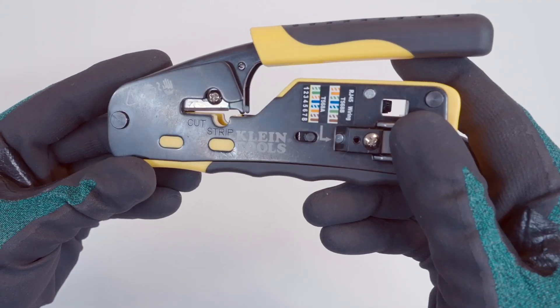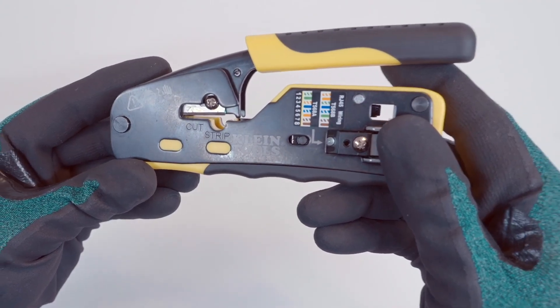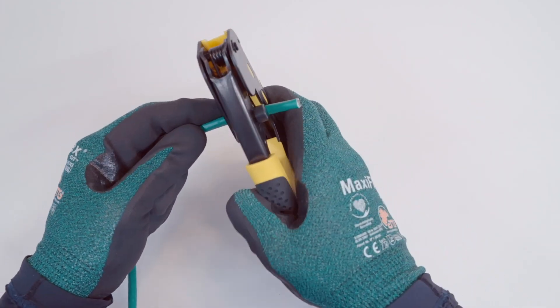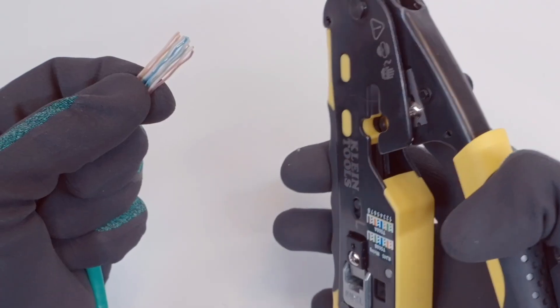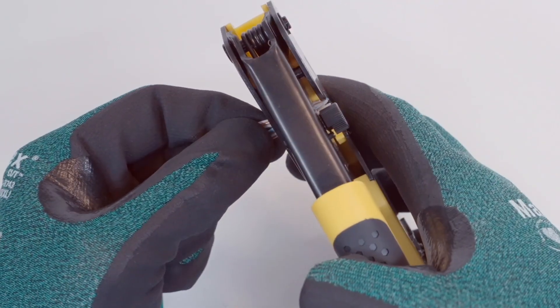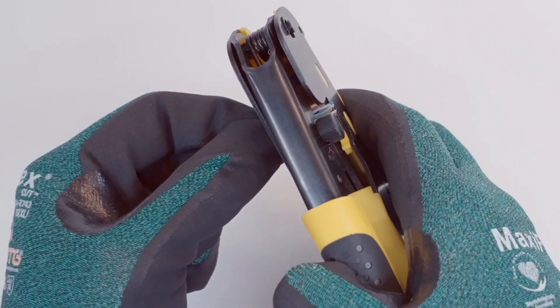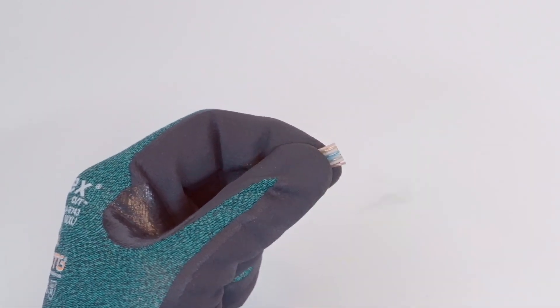This crimper includes a blade to score the jacket. If using a crimper that doesn't include this blade, a utility knife can be used as a substitute. This crimper also has a blade to cut the ends of the wires. If this feature is not available, diagonal cutters or linesman's pliers can be used.